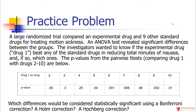Let's apply this to a practice problem. Imagine a large randomized trial comparing an experimental drug to nine other standard drugs for treating motion sickness. An ANOVA test reveals some significant differences between groups, but doesn't say which groups differ, so you run nine pairwise t-tests comparing drug one to each of the other nine. You get p-values for each comparison. Without correction, anything below 0.05 would be significant, but that doesn't correct for multiple comparisons.